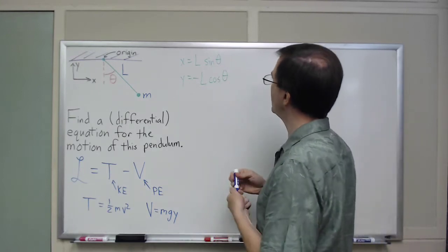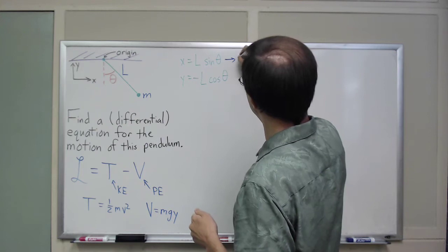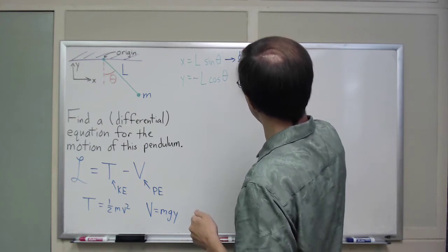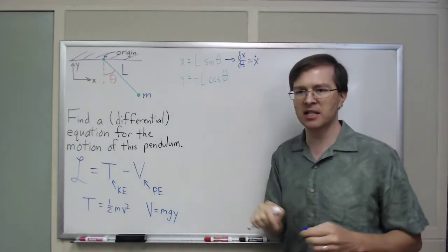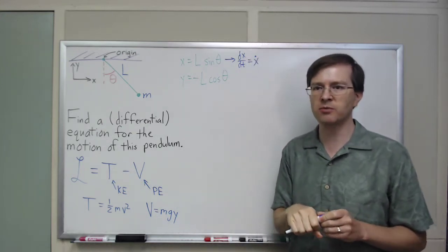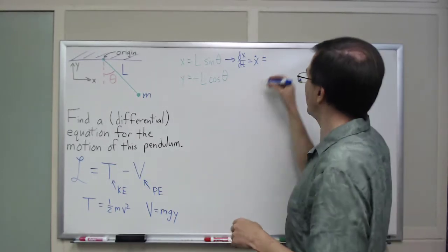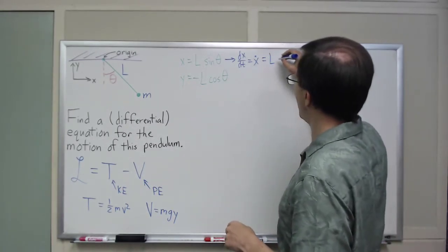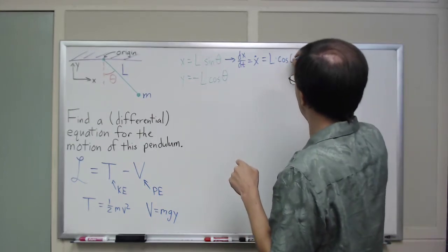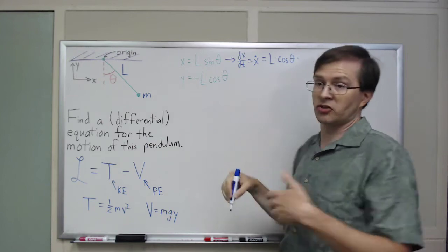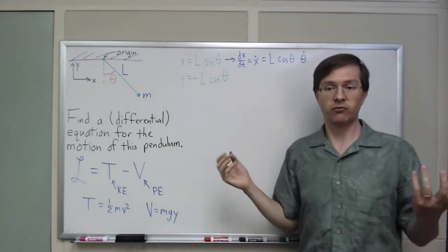If this is x, then dx dt is, I'm going to use the notation x dot for that, because it's a nice convenient notation to use, and it's much more compact than dx dt. x dot is equal to, I've got to use the chain rule, right? L is a constant times the derivative of sine of theta is cosine theta, and then chain rule times d theta dt, or just theta dot.